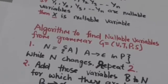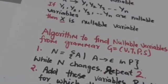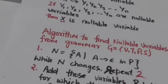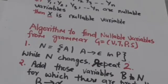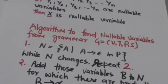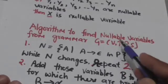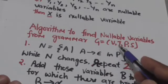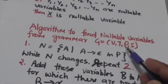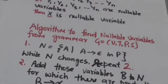Now how can we find nullable variables from a given grammar G? There is an algorithm to find nullable variables of a given grammar G, where G is defined by a quadruple (V, T, P, S) — where V is the set of variables, T is the set of terminals, P is the set of productions, and S is the start symbol.